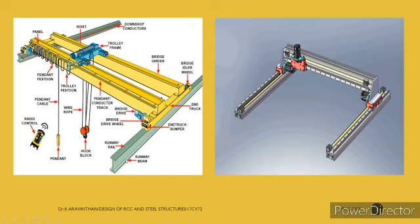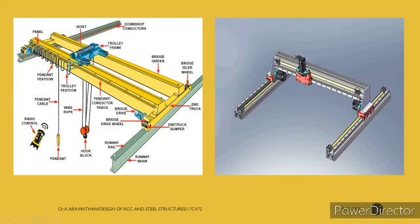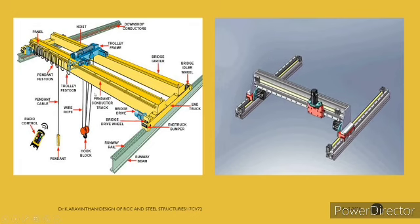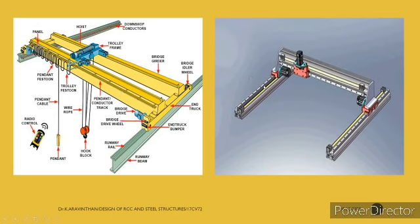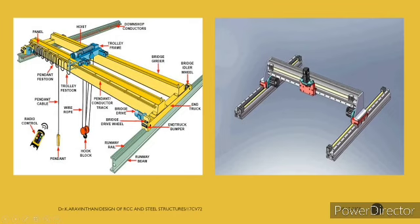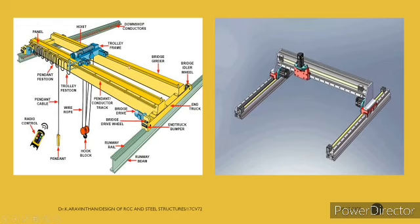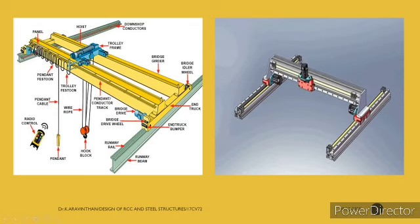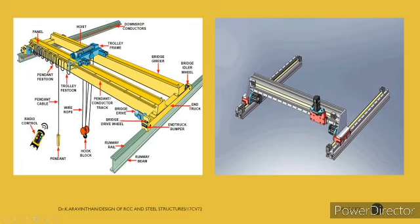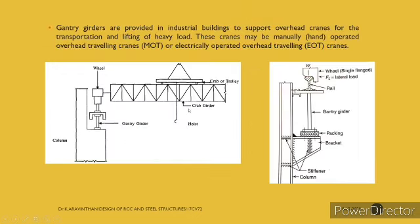Above the I-section there is a runway rail, and through this rail the crane girder — also called the bridge girder — moves along the length. Whatever load is taken by the hook is transferred to two girders. Half the load is transferred to one gantry girder and the other half to the second. The crab girder and the gantry girder are thus differentiated.